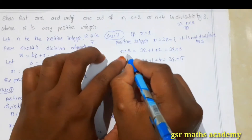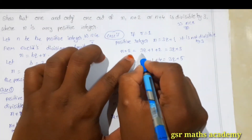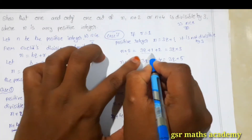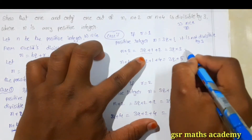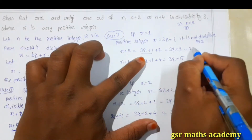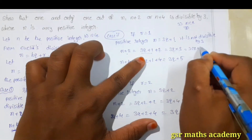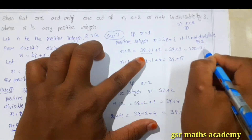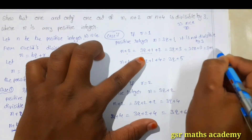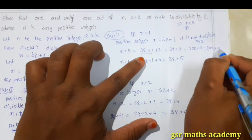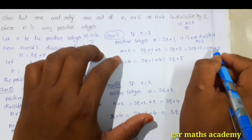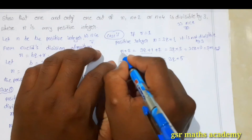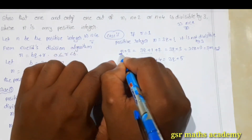And if you take n plus 2, since n equals 3q plus 1, then n plus 2 equals 3q plus 1 plus 2, which is 3q plus 3. Taking 3 as common gives 3(q plus 1), which equals 3m. So we get remainder 0, meaning it is divisible by 3.